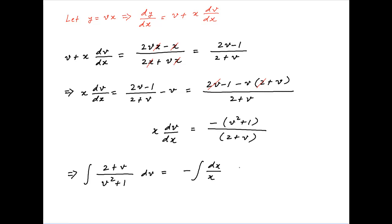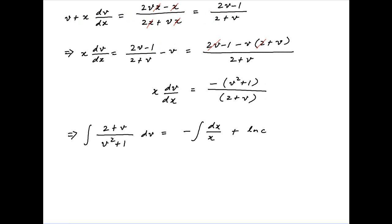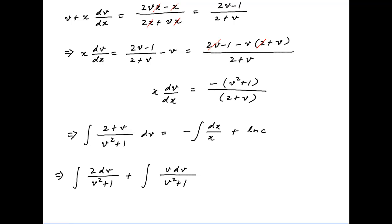Integrating both sides and introducing a constant of integration on the right hand side, let's denote it by ln c. The left hand side can be broken into two parts: the first component is the integral of 2 dv upon v squared plus 1, and the second component is the integral of v dv divided by v squared plus 1.